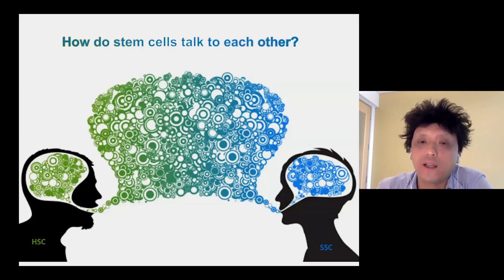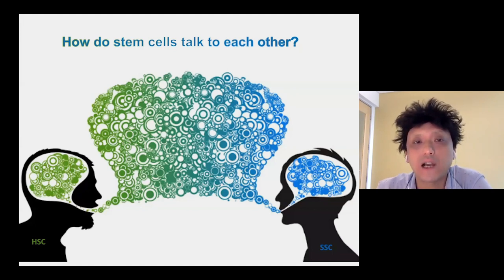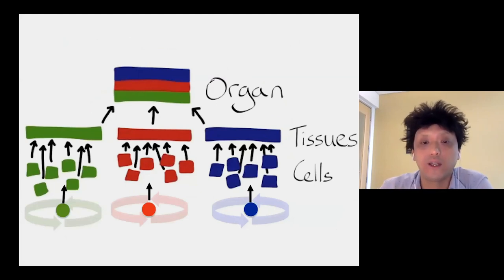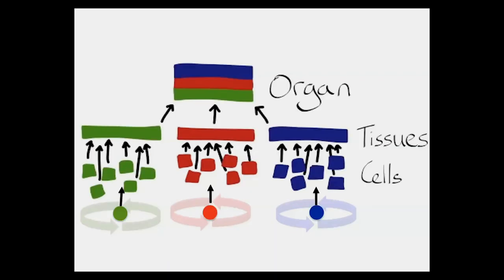An individual bone is actually a complex organ composed of many different types of stem cells. This gives us an opportunity to understand how different stem cells communicate with one another in the context of complex organs. An organ is basically a composite of many different types of tissues, and as it grows and regenerates, the source of new tissues has to come from somewhere. Most of these different types of tissues contain their own tissue-specific stem cells, and these stem cells must somehow communicate to coordinate activity and produce the proper ratio and types of cells.